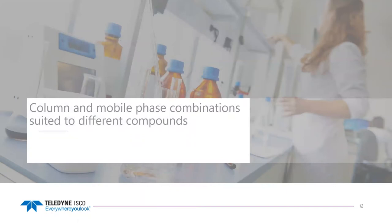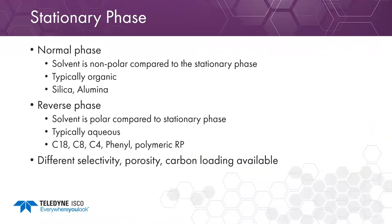Next, we'll get into some column and mobile phase combinations. There's normal phase and there's reverse phase. Typically, people I work with are doing reverse phase — C18, maybe some C8, and occasionally an AQ column. You can use normal phase on the ACUPREP system, usually for compounds where you want to use a simple silica column with organic solvent phases. If you have polar compounds, they're typically not going to work well in normal phase, so you'll want to use reverse phase, where we can have different selectivity, different porosity, and different carbon loading on the individual columns.